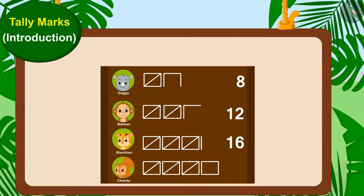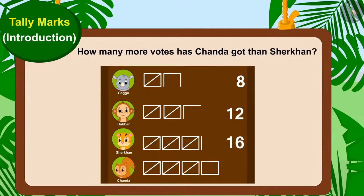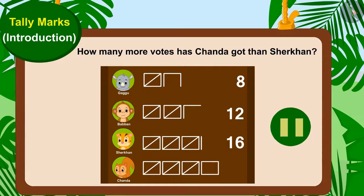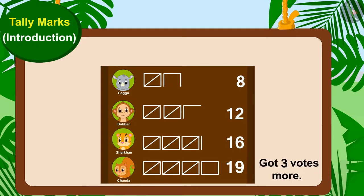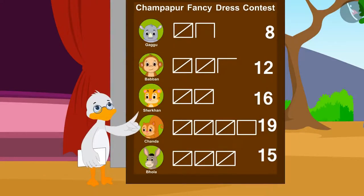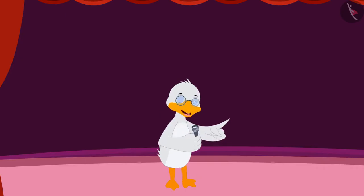Now, can you tell how many more votes has Chanda got than Shere Khan? If you wish to, you may stop the video and find the answer. Yes, Chanda has received nineteen votes and Shere Khan has got sixteen votes. This means Chanda got three more votes than Shere Khan. Badbole Uncle too, like you, counted the votes and announced the winner of the contest.